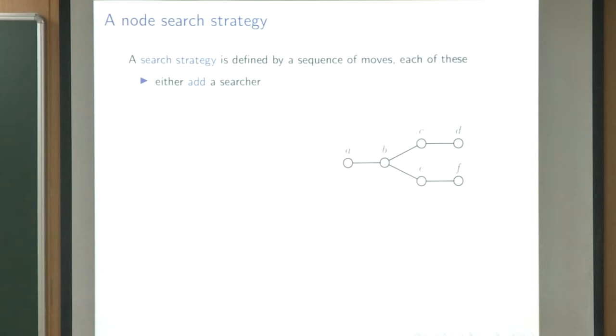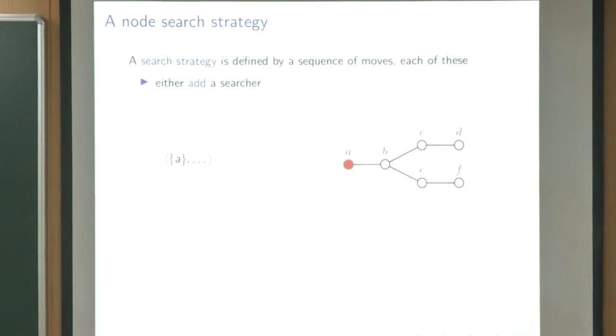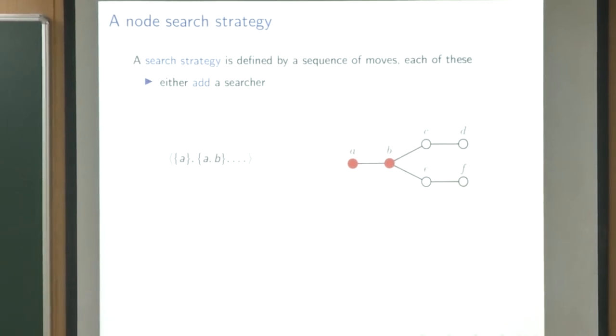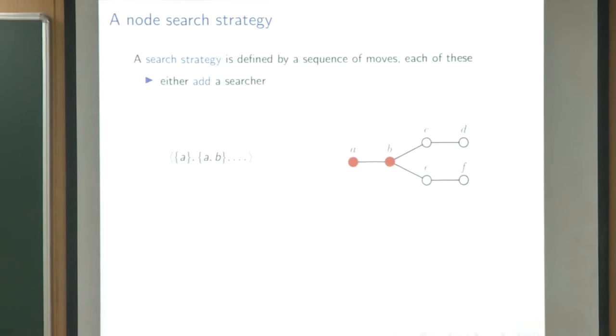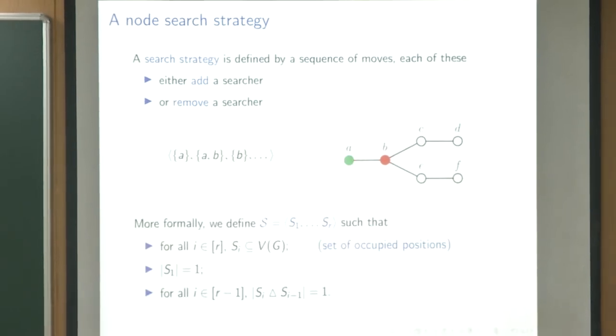Formally, a search strategy says we can either add a searcher to some vertex of the graph — for instance, vertex A — or add another searcher at vertex B. So we could first place to A, place to B, and then remove the searcher from A.